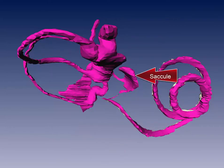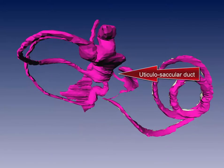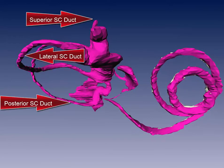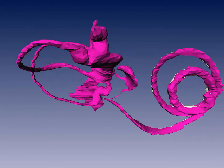Saccule, utriculosacular duct, utricle, and the lateral, superior, and posterior semicircular ducts. Each semicircular duct has an ampulla, which has a crista.